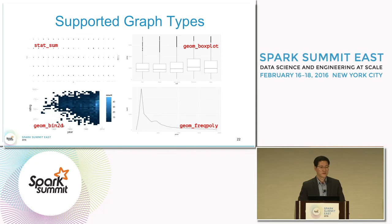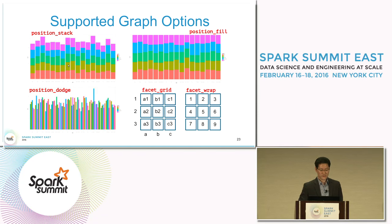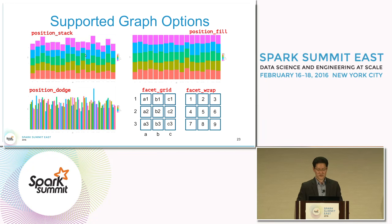geom_bin2d draws a heat map where different counts are displayed in different colors. geom_freqpoly draws a frequency polygon where frequency data points are connected as a polygon. With three position-related options—position_stack, position_fill, and position_dodge—you can adjust the positions of graph elements so they do not occupy the same space.